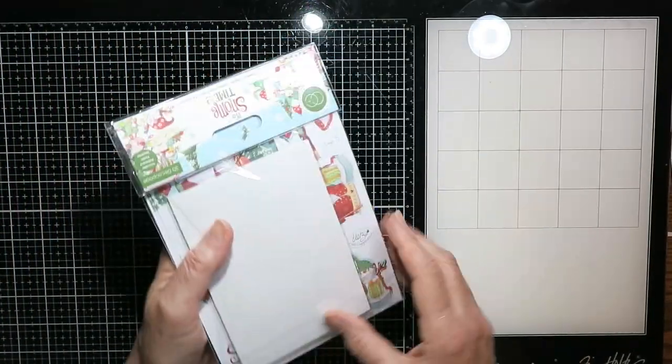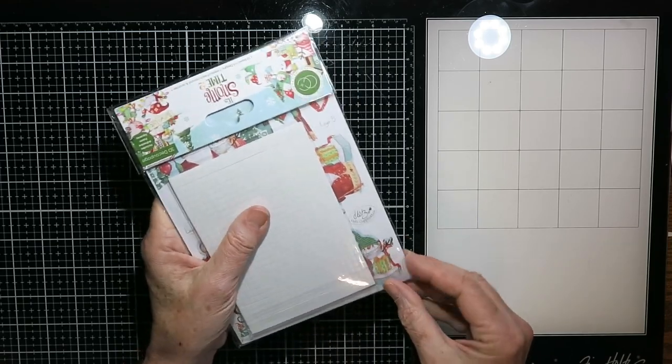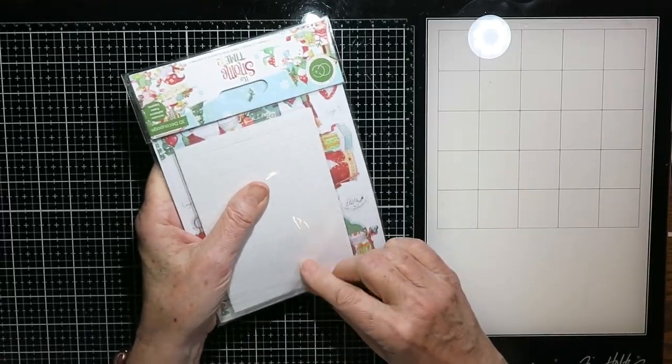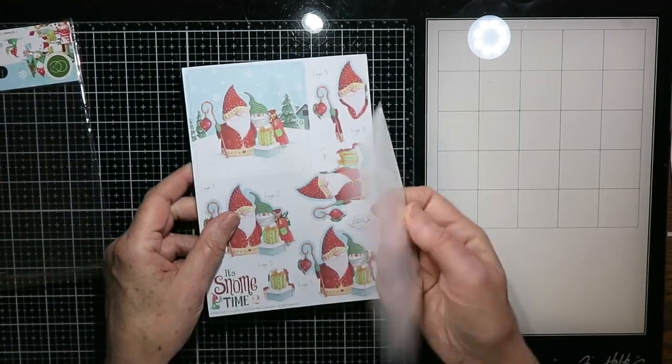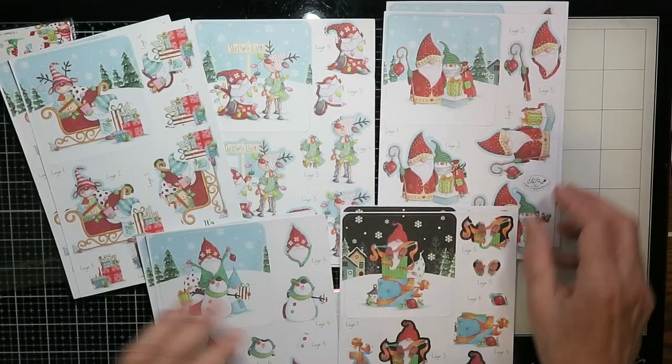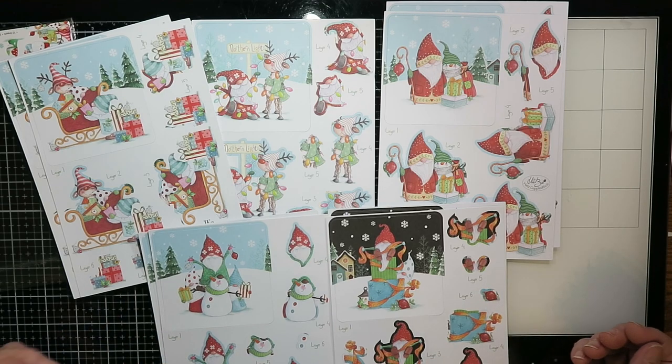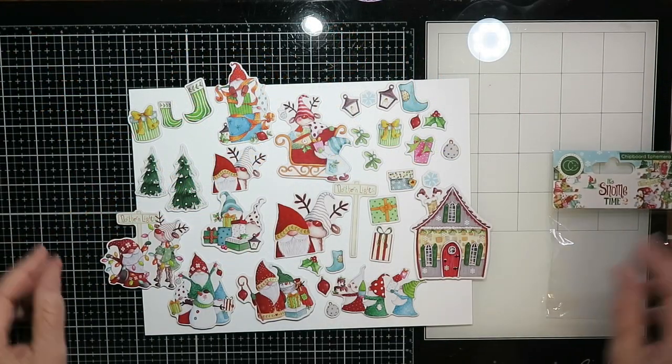Now this is the 3D decoupage set and this year it comes with foam tape and they're just tiny little squares of foam tape which is perfect for the decoupage. So there are two sets or two sheets of five different designs with that.